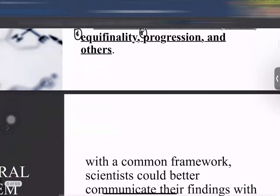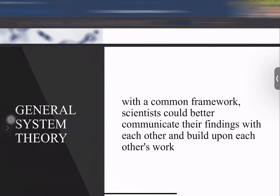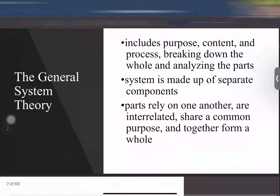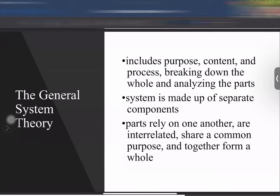The general systems theory tells us that with a common framework, scientists could better communicate their findings with each other and build upon each other's work. Before, scientists would work individually with no regard for each other's research. With the emergence of Bertalanffy's general systems theory, there started to be a harmonization of research findings across the globe. The theory includes the purpose, content, and process of breaking down the whole and analyzing the parts — a system has several subcomponents.